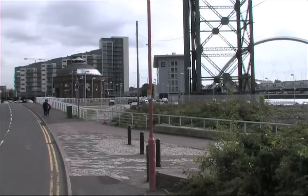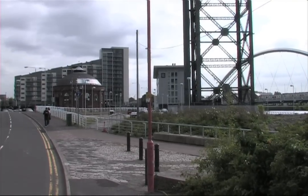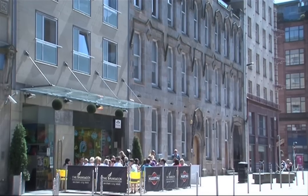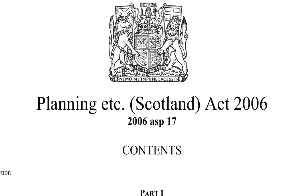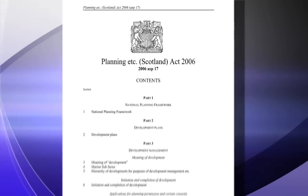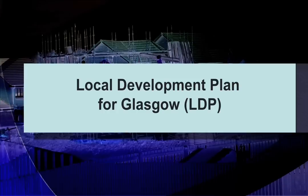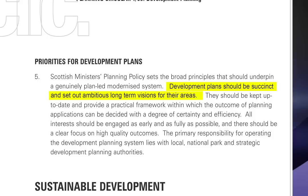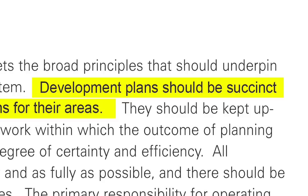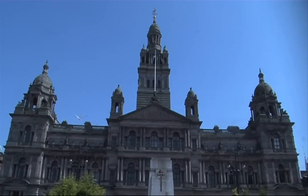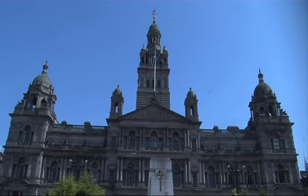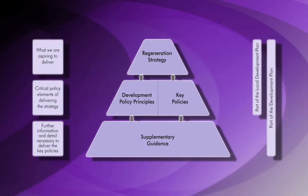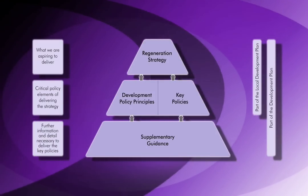Finally, the main issues report sets out how the policies currently included in City Plan 2 may evolve in response to the main issues identified and the requirements of the new legislation. The Council's intention is that the proposed local development plan will meet Scottish Government guidance by being a succinct document. As a result, the policy content of the proposed plan will centre on a limited number of key policies, which will in turn be supported by more detailed supplementary guidance.